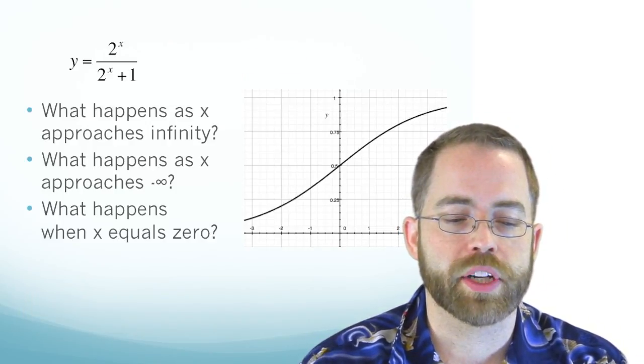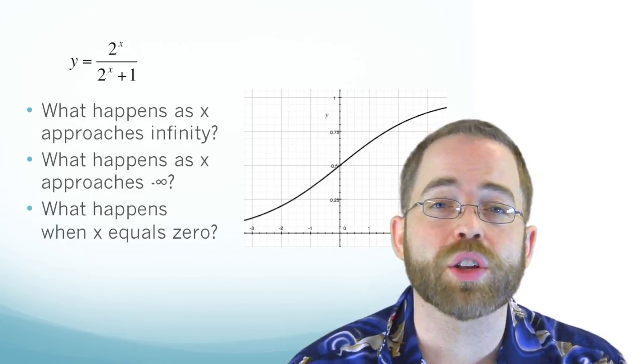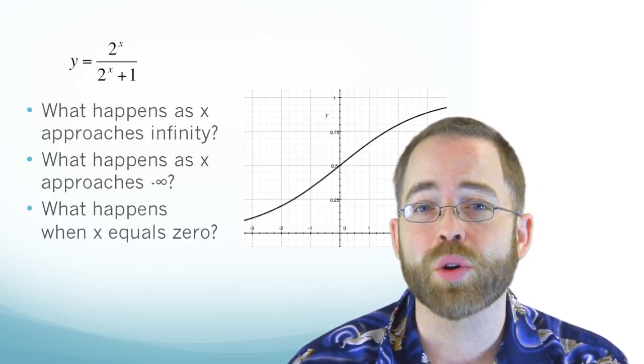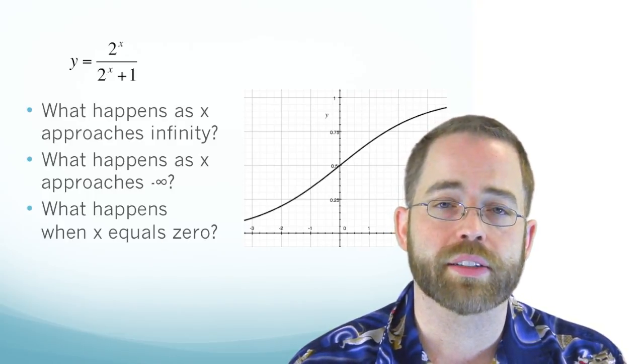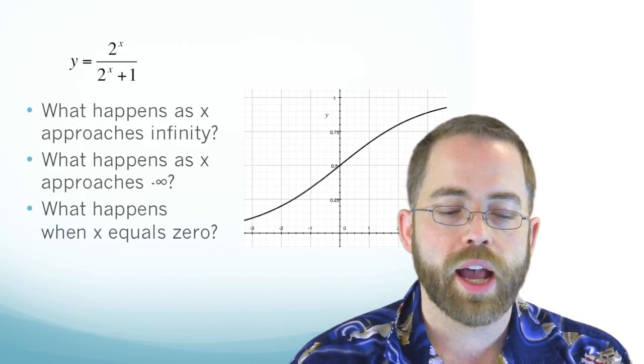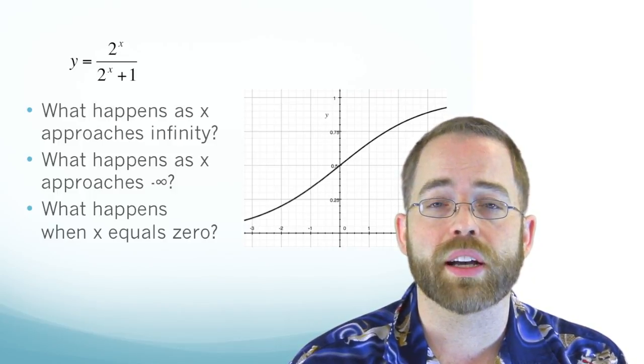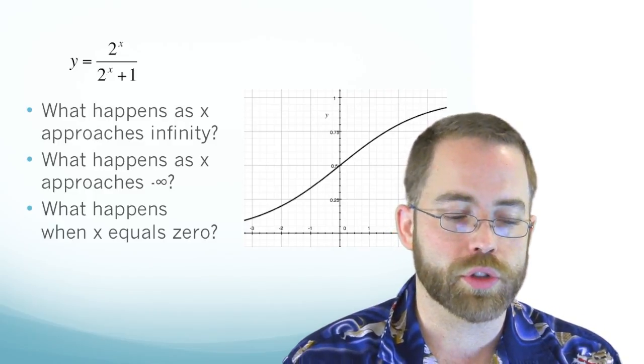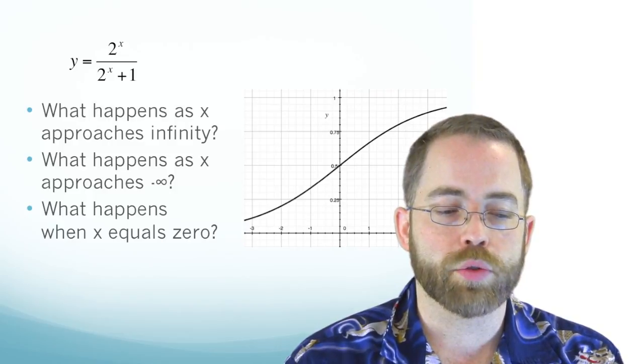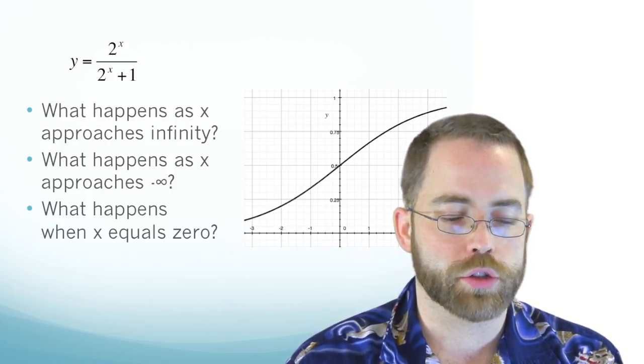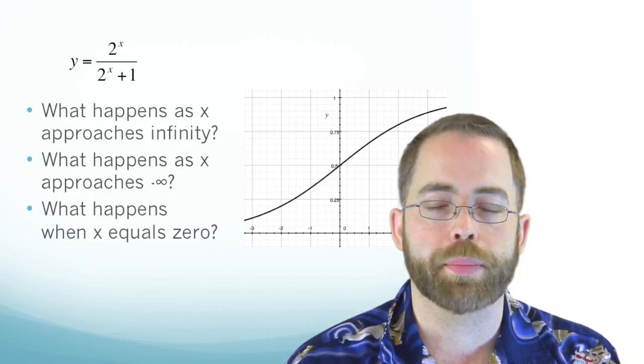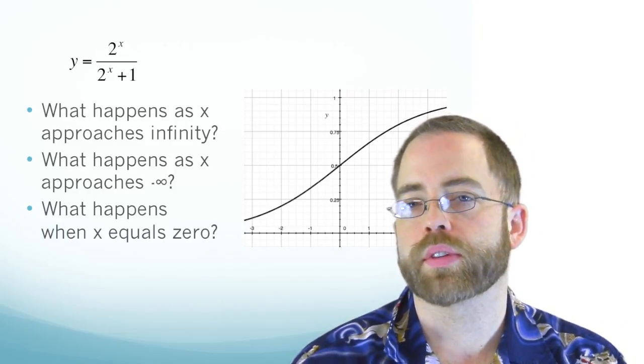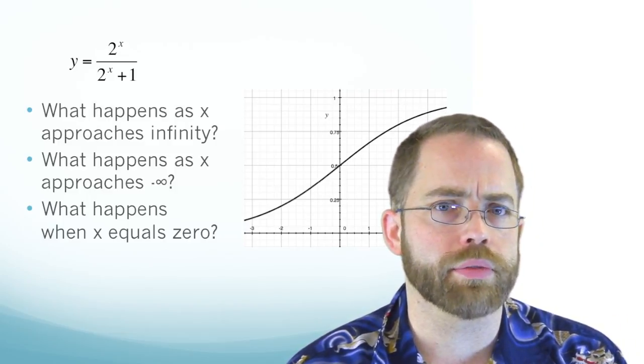What happens as x approaches infinity? We're going to, in this graph, get closer and closer and closer to the number 1. That the numerator and the denominator are getting closer and closer together, nearly identical, which would make it tend towards 1. As we go to negative infinity, we're going to have a bigger denominator than a numerator. So that's going to get us closer and closer to 0. And right at 0, we're going to have 1 on top and 2 on bottom. So that's half. So that's sort of the key points of this graph, if you can consider infinity to be a key point.